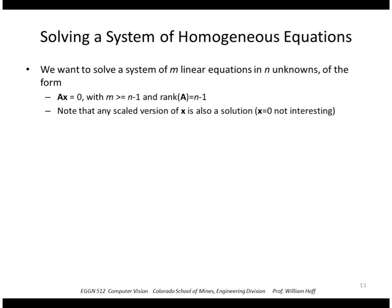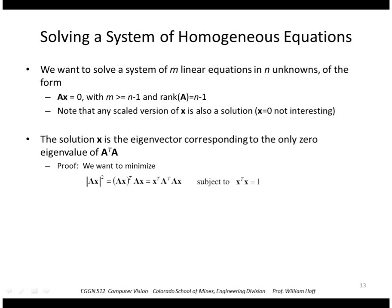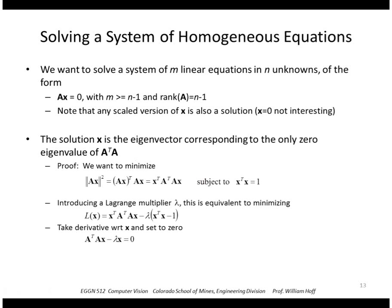We need to solve the system of equations in the form Ax equals 0. As we saw before, the solution is the eigenvector corresponding to the only zero eigenvalue of A transpose A. I went through this in the discussion of SVD, so I won't repeat that proof here.